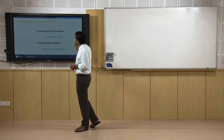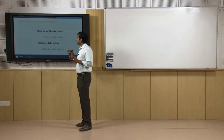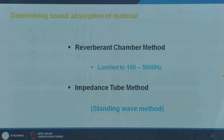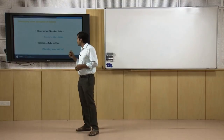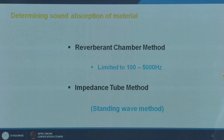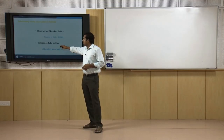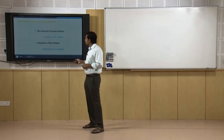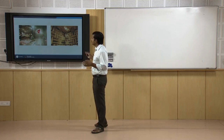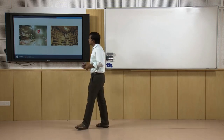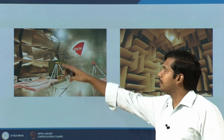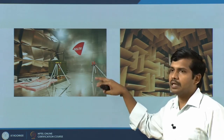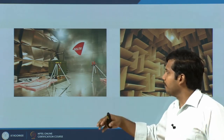Just for information, that is the first method. The second method is called the impedance tube method, which applies the principle of standing waves. I will quickly show you the chambers and the testing devices. This is a reverberant chamber — you place the material inside. It has infinite reflections and the reverberation time is very long.